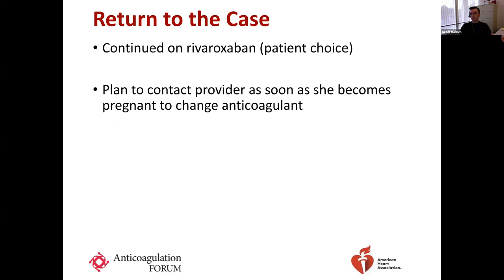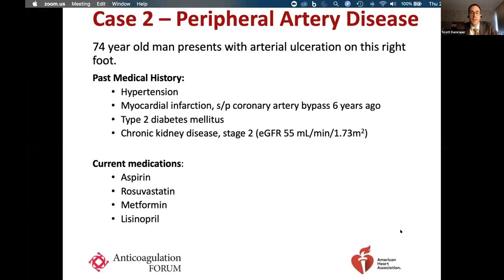To wrap up Case 1: this patient chose to continue on rivaroxaban after our discussion. We strongly stressed the importance of contacting us as soon as she thought about getting pregnant, because we wouldn't want her taking a direct oral anticoagulant if planning pregnancy — we'd switch her to a medicine with a better-known safety profile for pregnant patients. Now we're going to switch to something very different, both with respect to medications and the patients themselves.